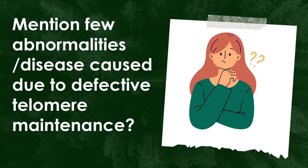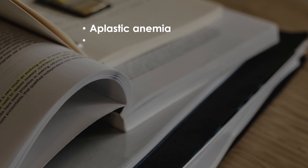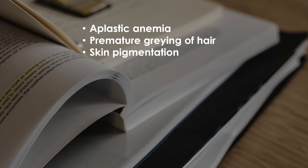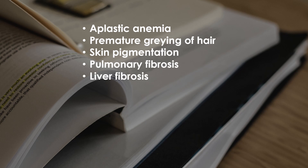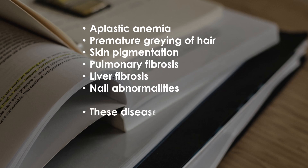Mention a few abnormalities or diseases caused due to defective telomere maintenance. The diseases are aplastic anemia, premature greying of hair, skin pigmentation, pulmonary fibrosis, liver fibrosis, and nail abnormalities. These diseases are called telomeropathies.